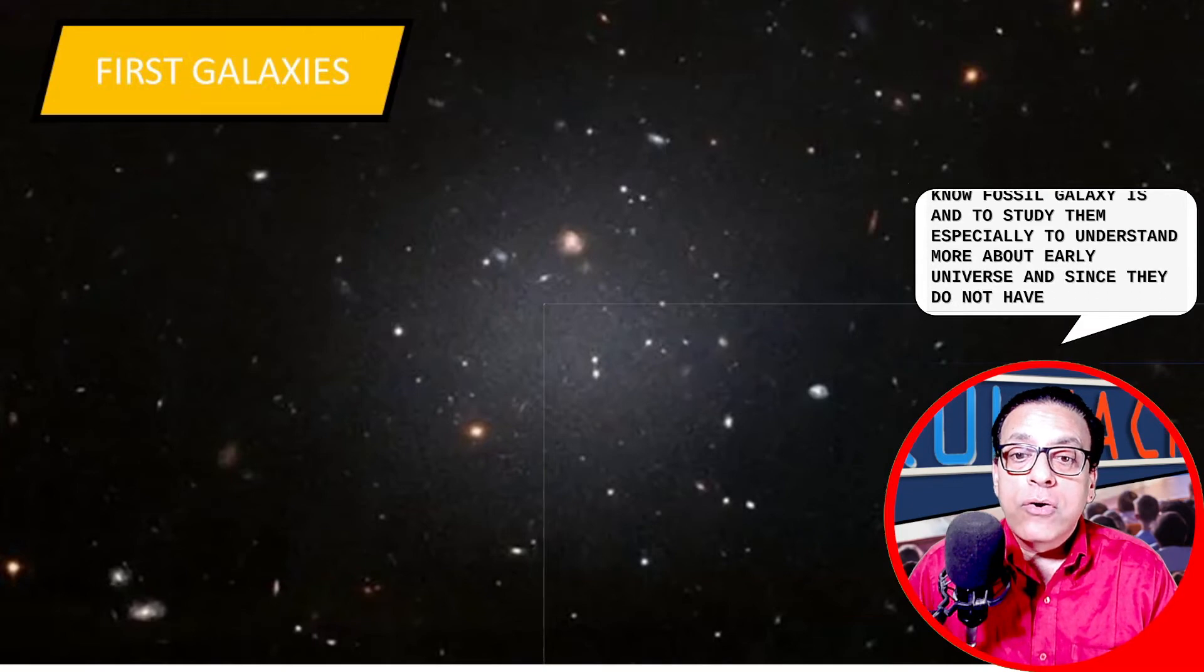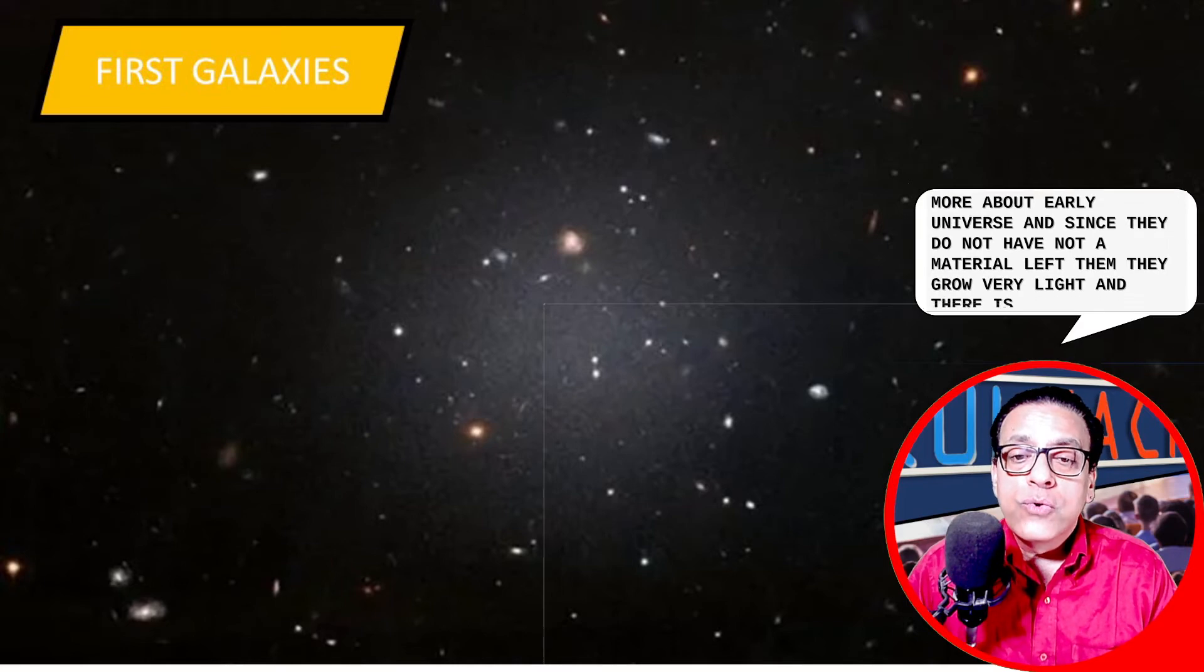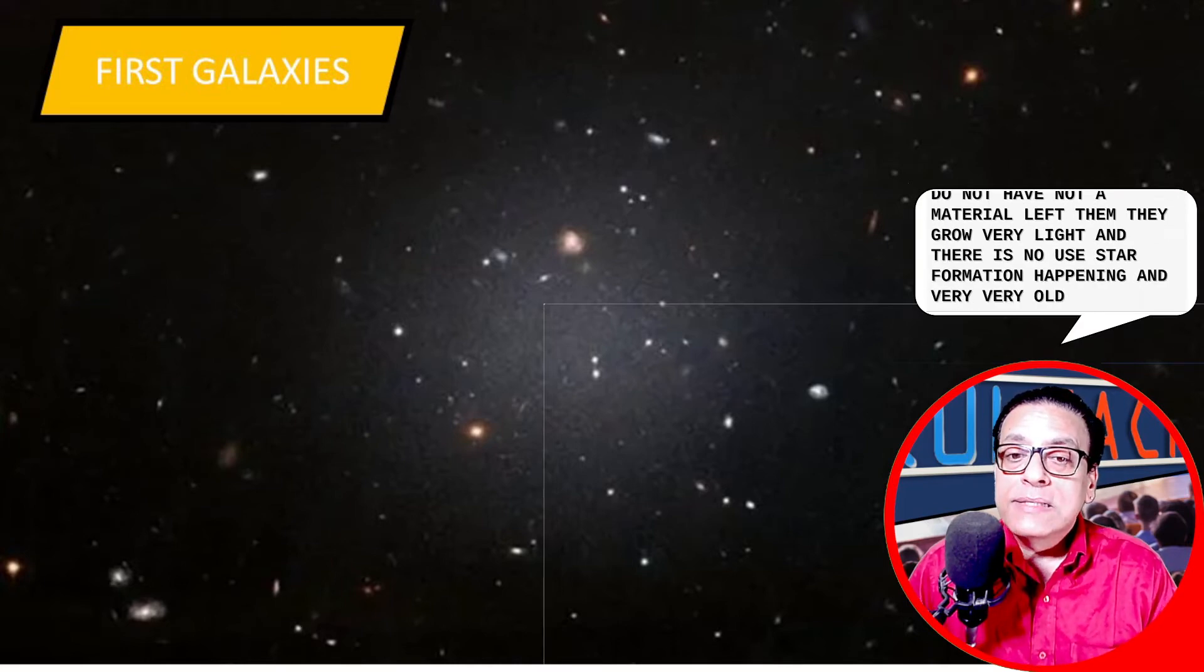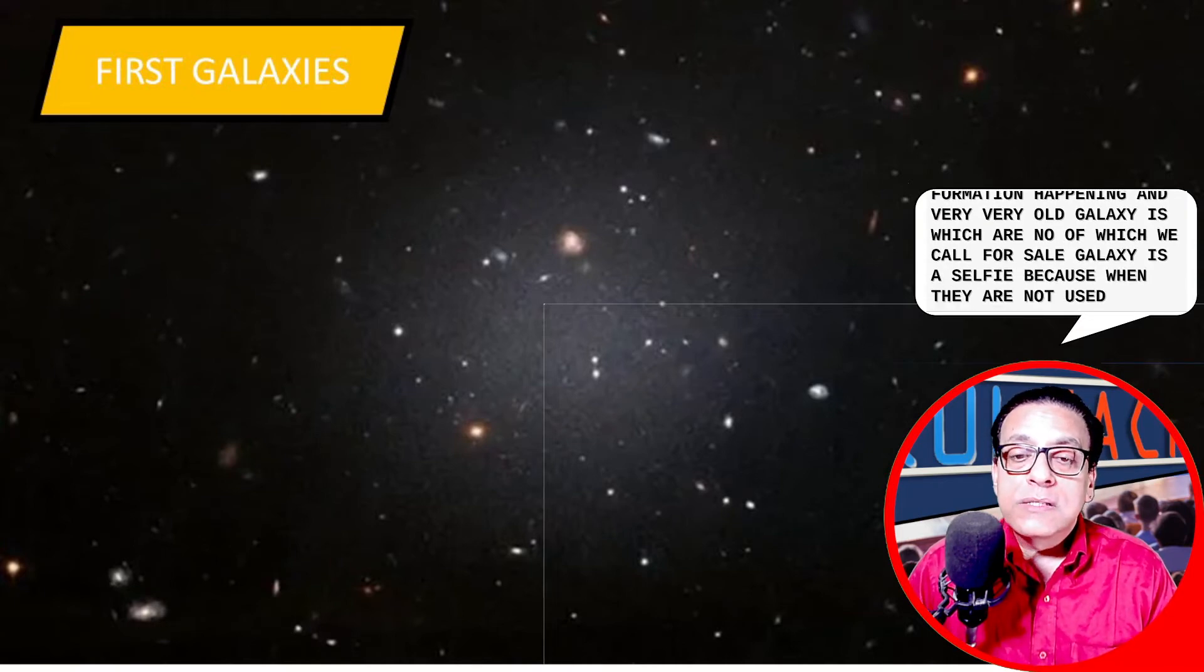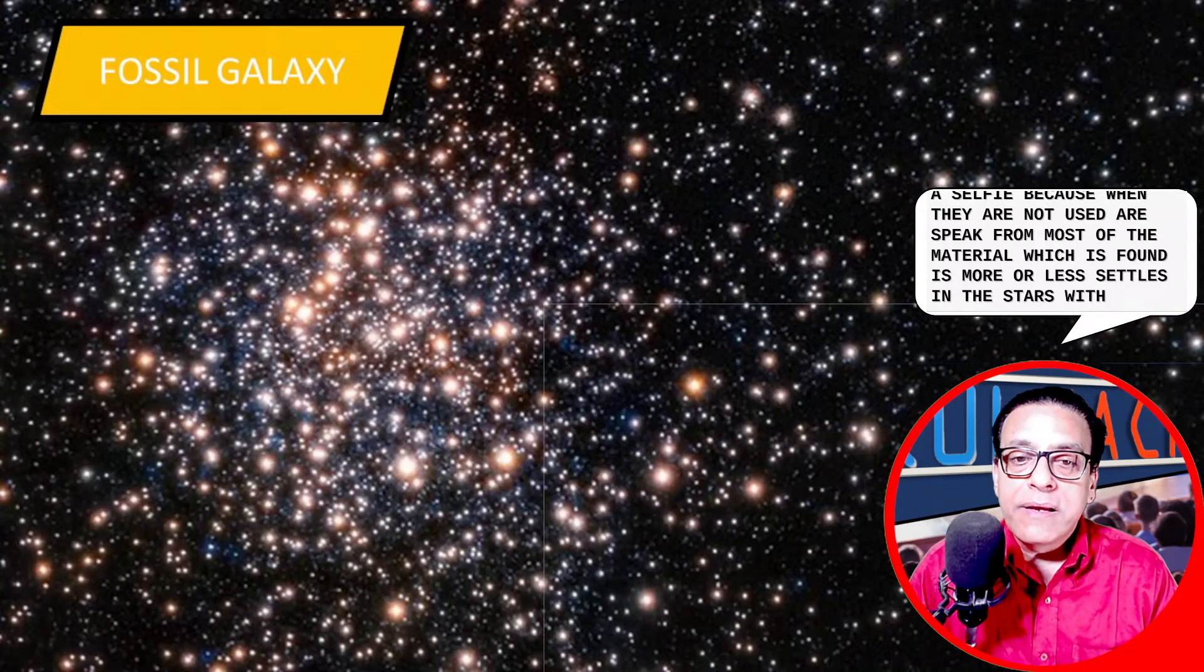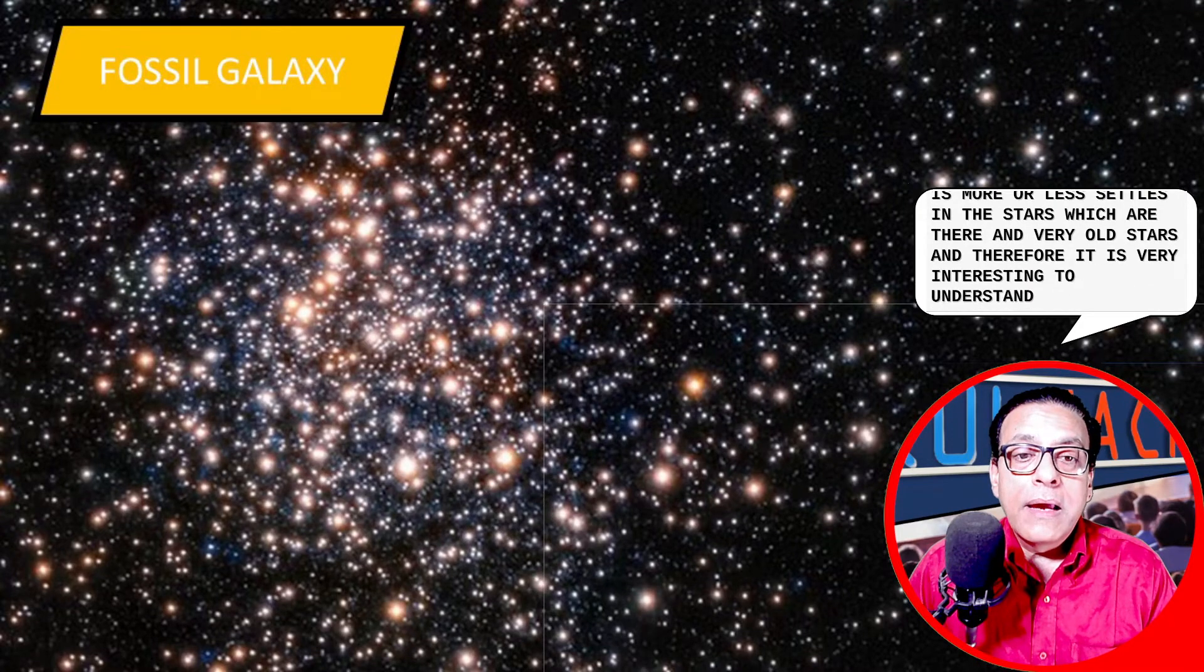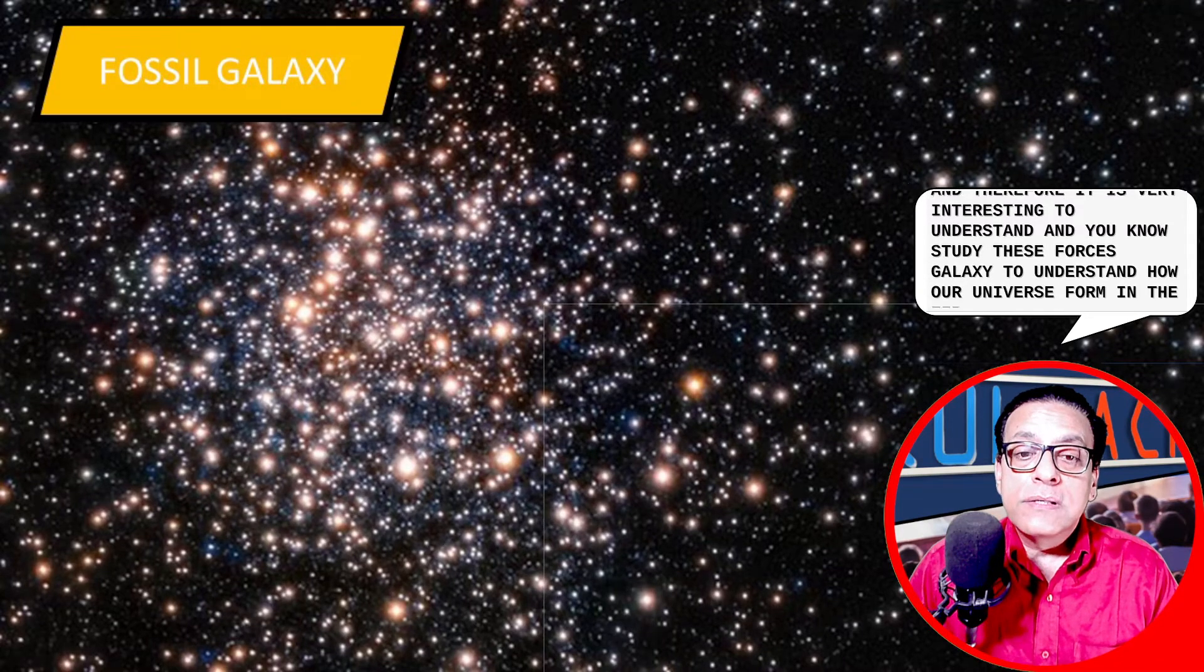And since they do not have a lot of material left in them, they glow very lightly. And there is no new star formation happening in the very old galaxies, which we call fossil galaxies. Simply because when there are no new stars being formed, most of the material which is found is more or less settled in the stars which are there, very old stars. And therefore, it is very interesting to understand and study these fossil galaxies to understand how our universe formed in the first place.